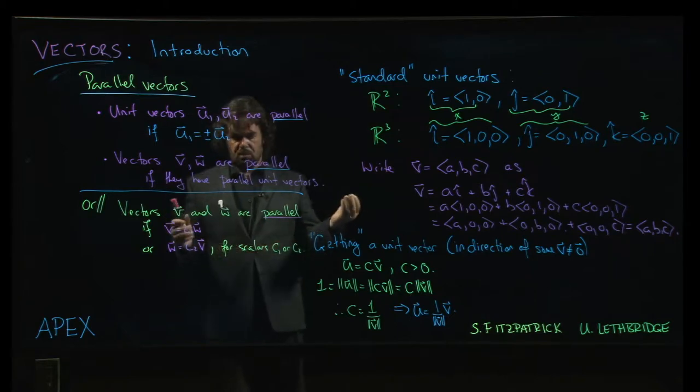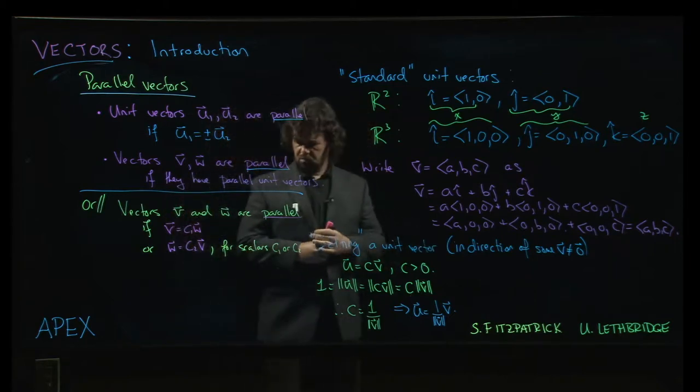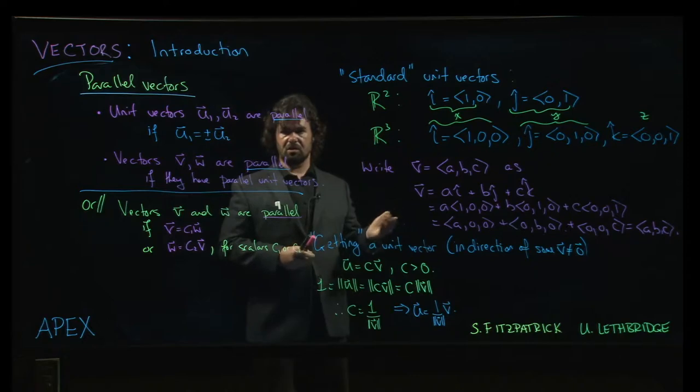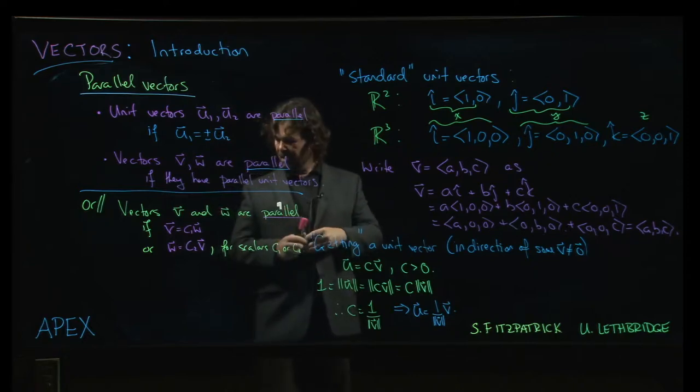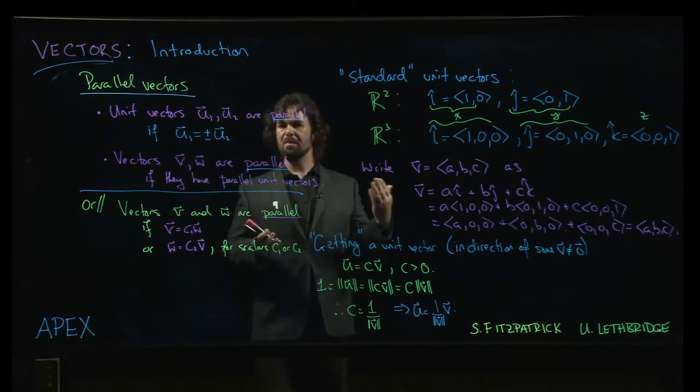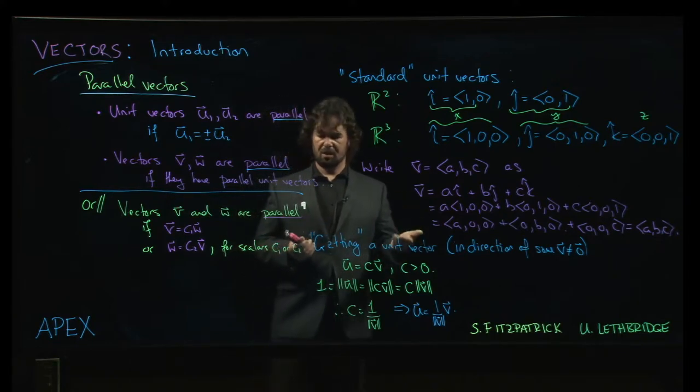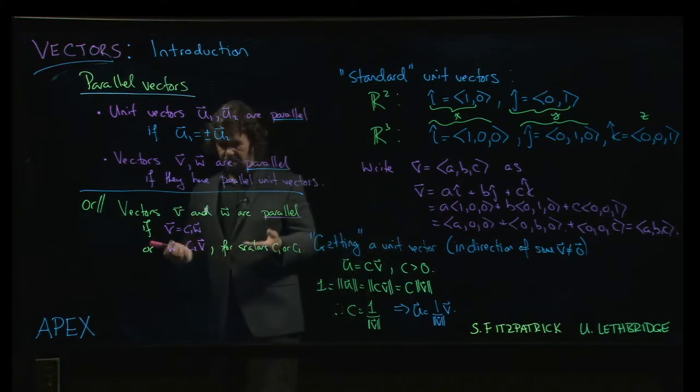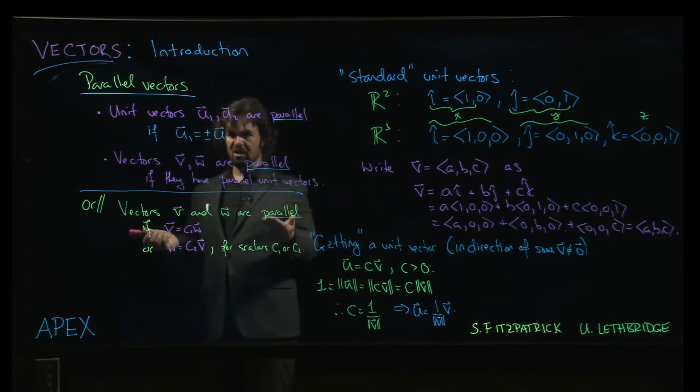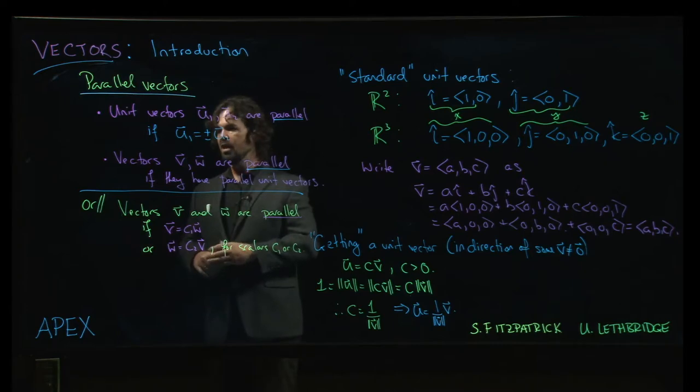I mean, the zero vector has no direction, or maybe it has every direction, depending on which way you want to think about it, right? And so typically, if you're talking about vectors being parallel, you're talking about non-zero vectors, because then they have a direction that you can make sense of. But you can even include the zero vector in this definition.